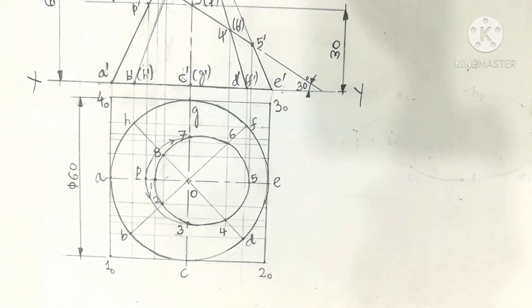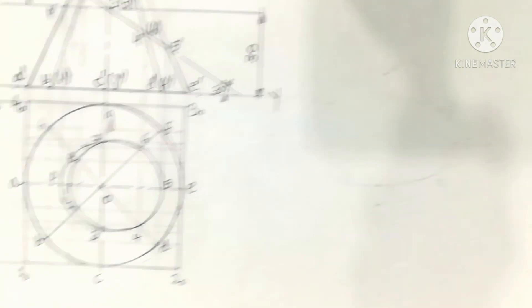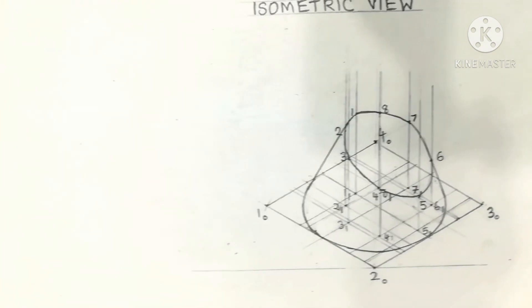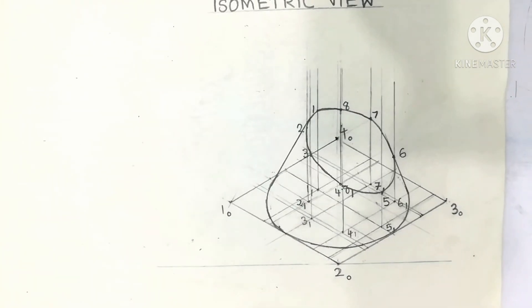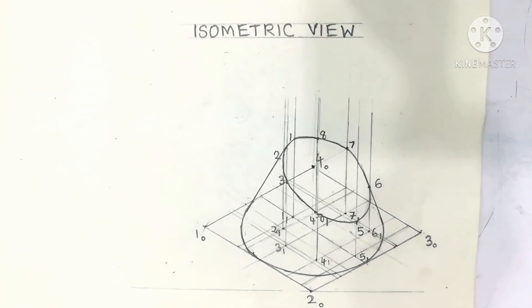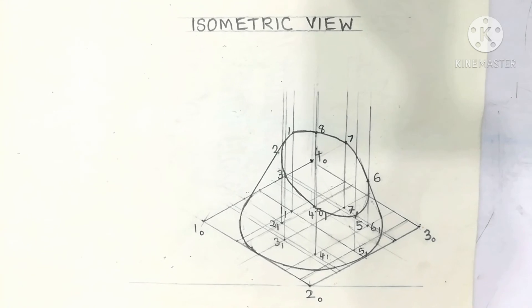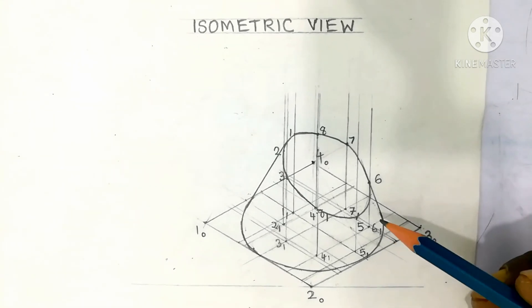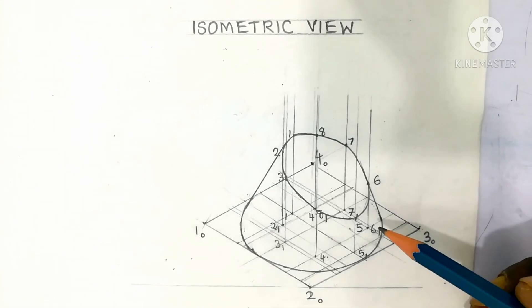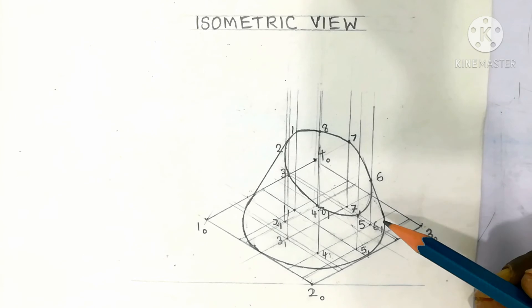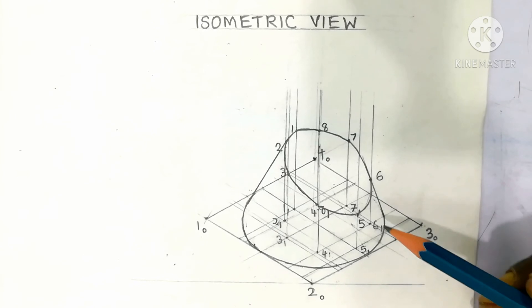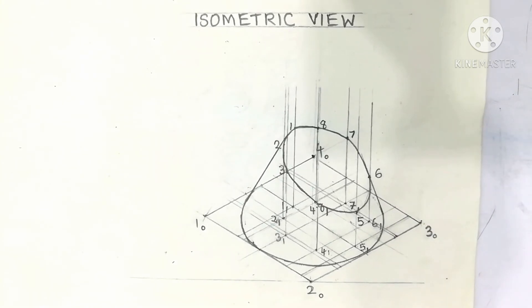This is the isometric view — a 3-dimensional view drawn here. This object is called the truncated cone shown in isometric view. It is a 3-dimensional representation and appears like this.